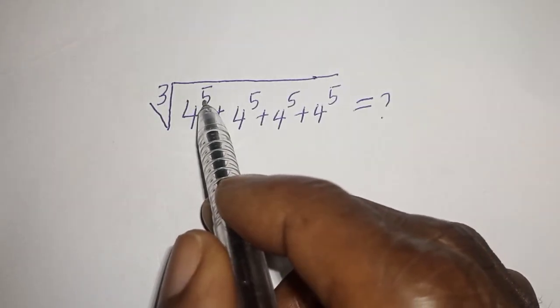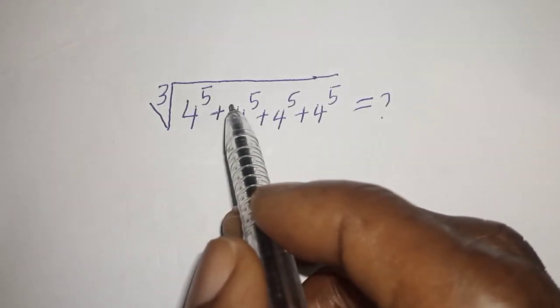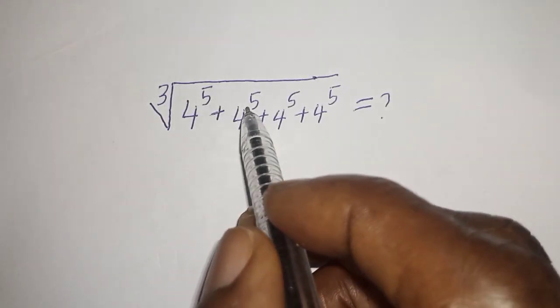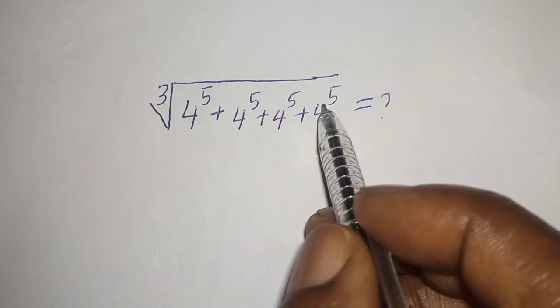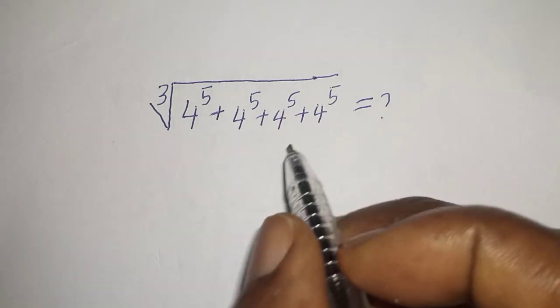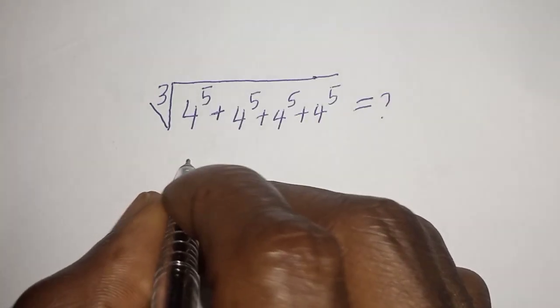Cube root of 4 raised to power 5, plus 4 raised to power 5, plus 4 raised to power 5, plus 4 raised to power 5, plus 4 raised to power 5 — what is the solution?